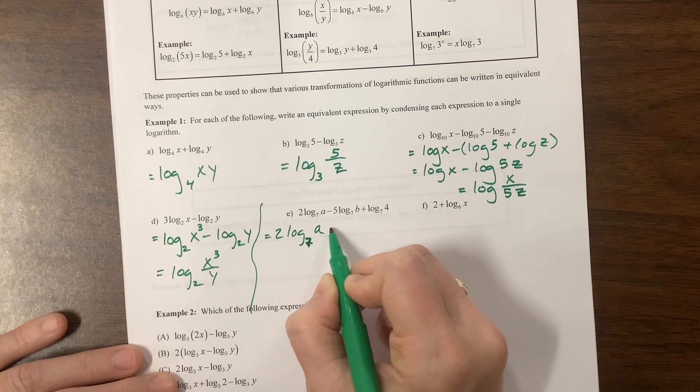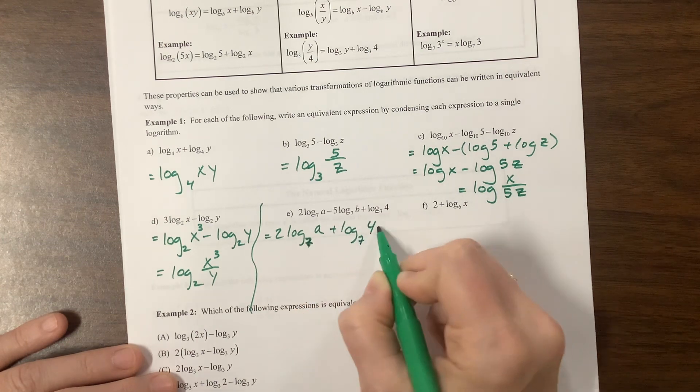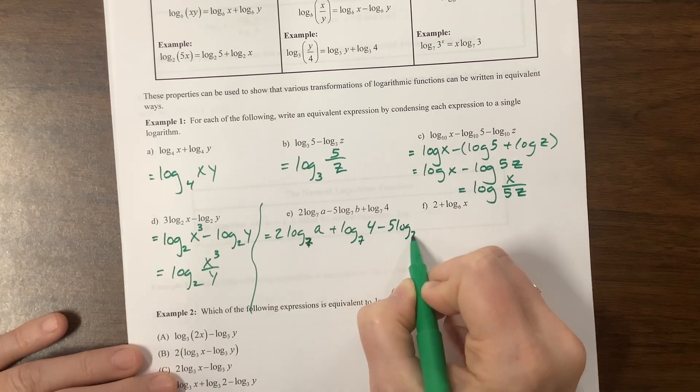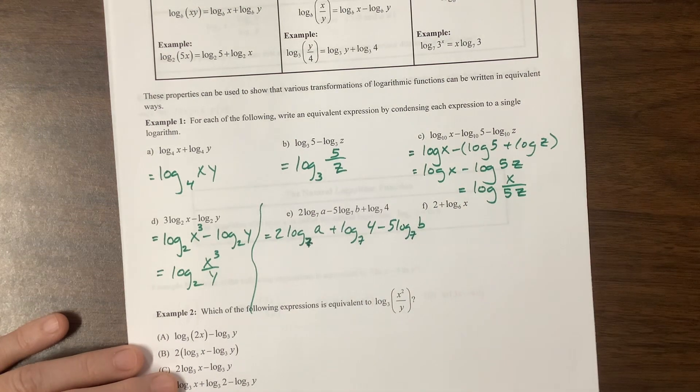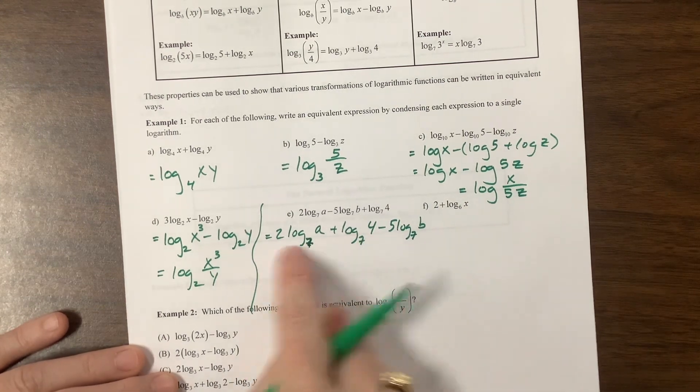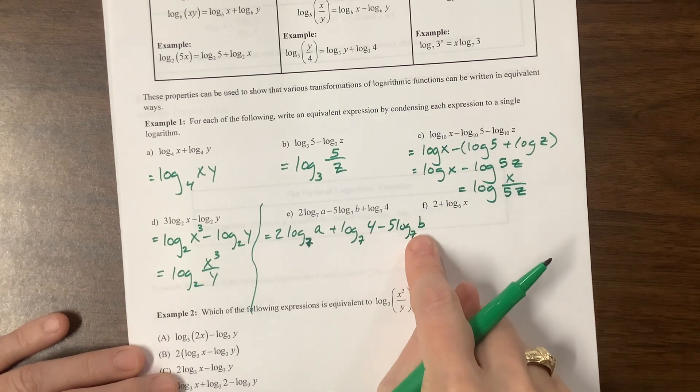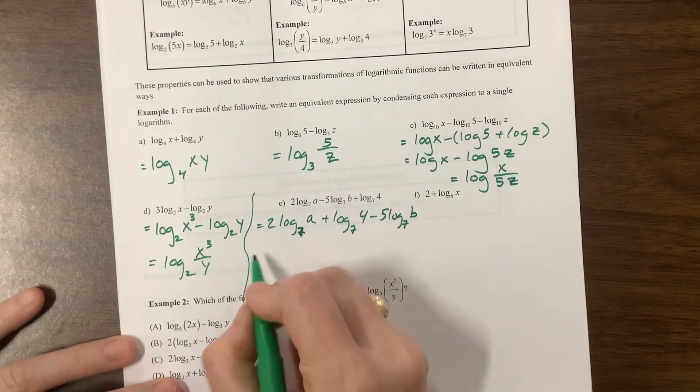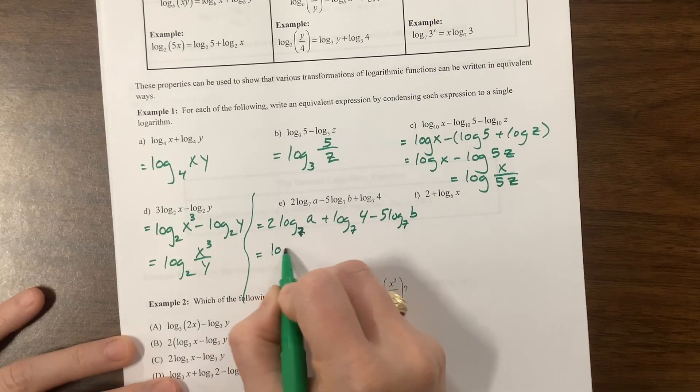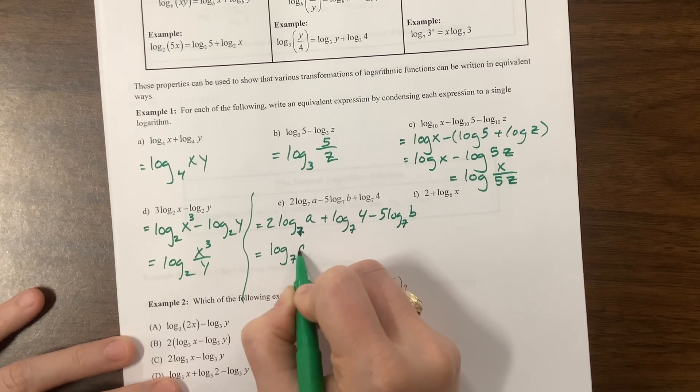You can see that those two would get squished together with multiplication, and this is going to stick around and stay behind as division. So this becomes log base 7 of a squared.